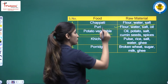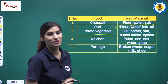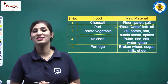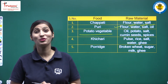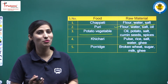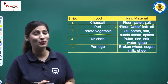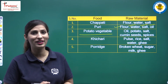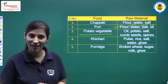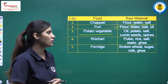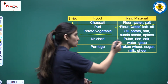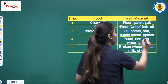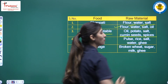Third one is potato vegetable. To make potato vegetable, first we need potatoes. What else do we need? Oil, water, salt, cumin seeds, and spices — masale bhi chahiye na.